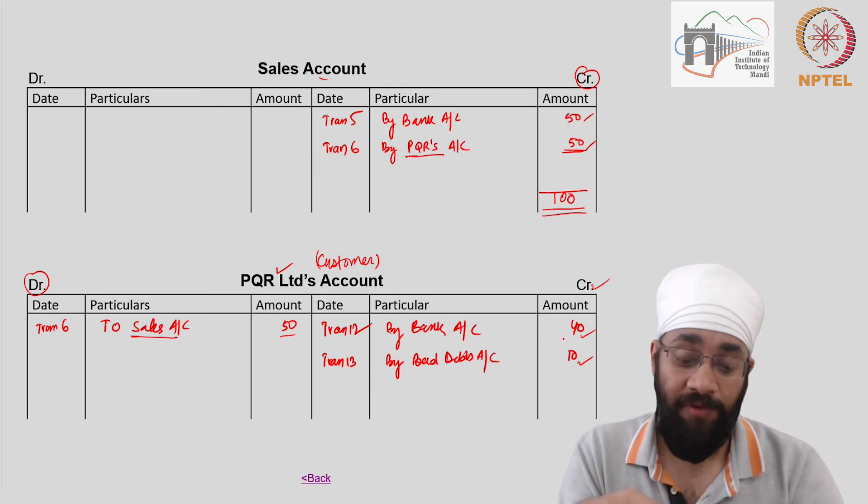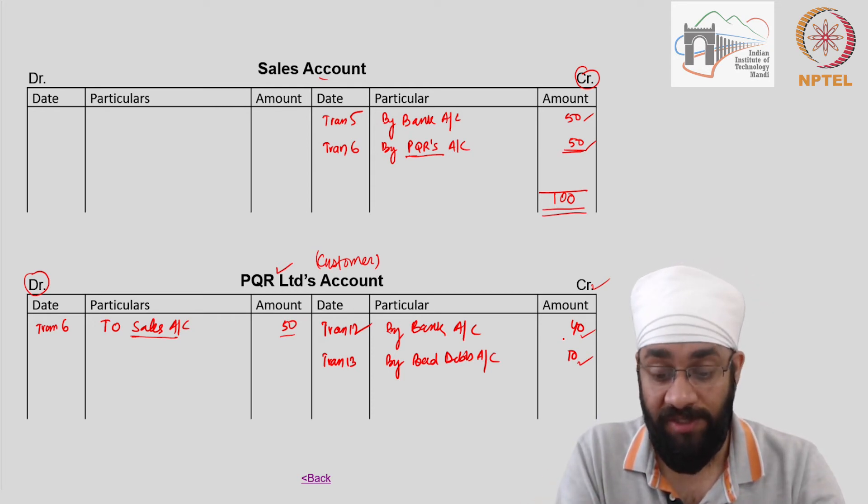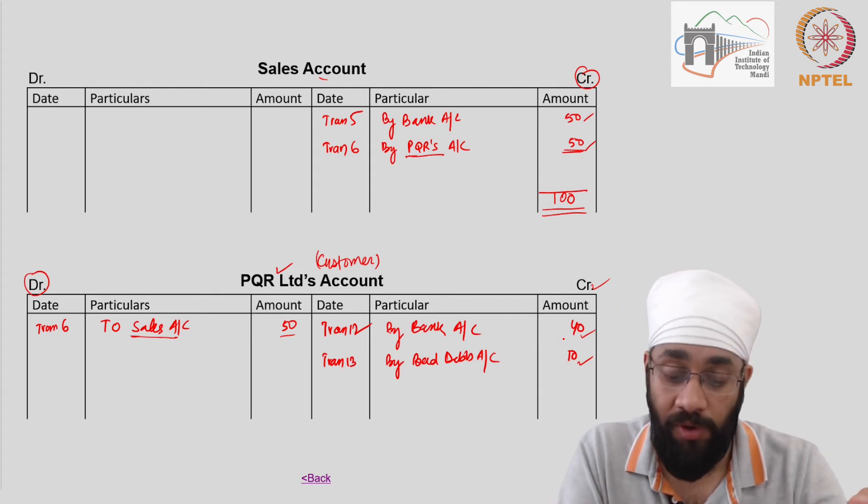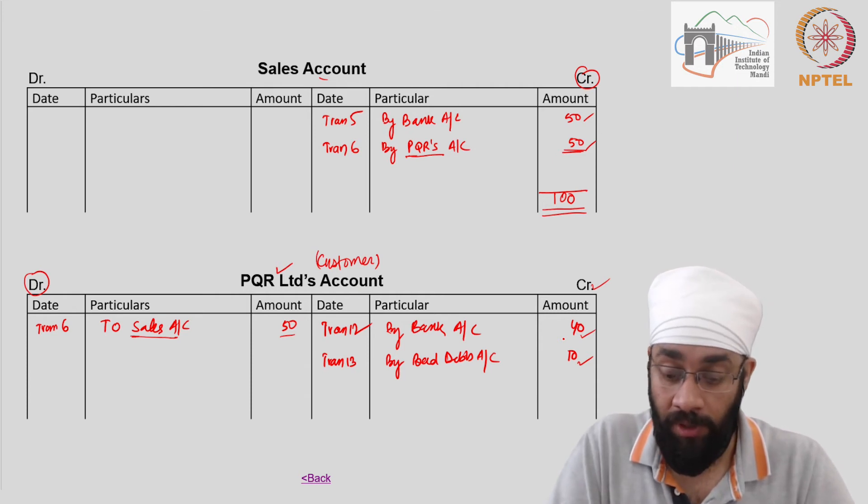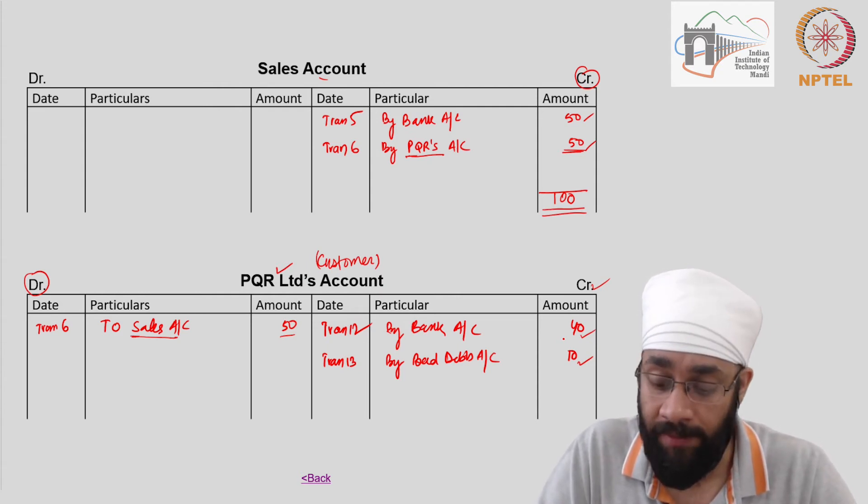There you go, a summary - you've classified all the transactions based upon their account, so all PQR transactions have been classified here at one place, brought into this account, and now you can just have a quick glance at it and come to some understanding, some conclusions.